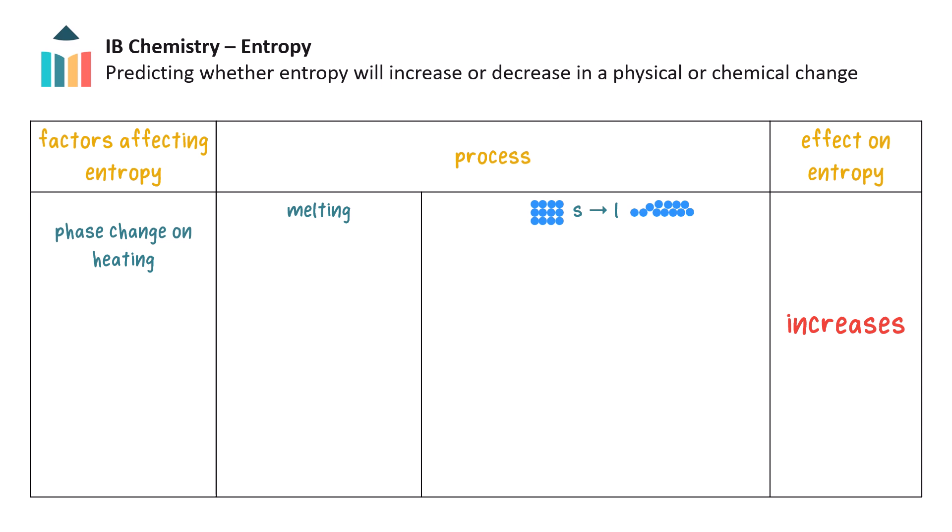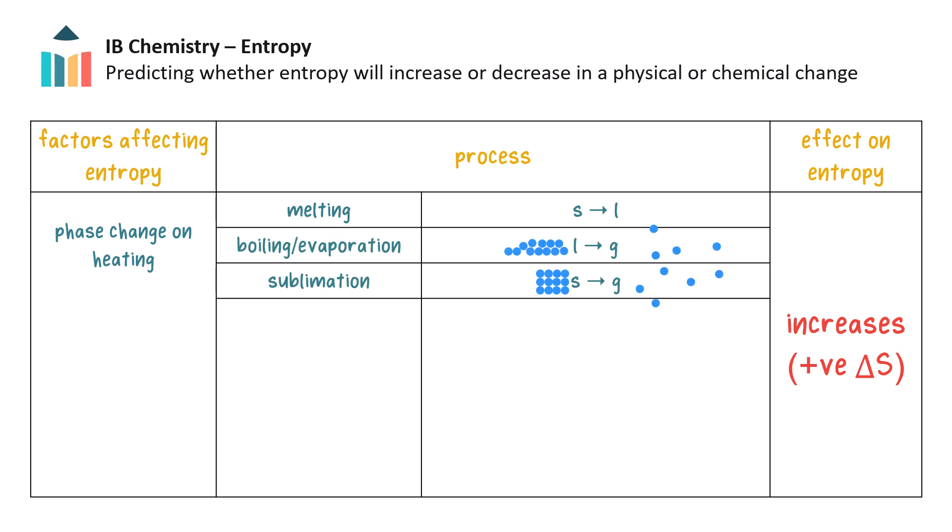We have already seen that when a solid changes to a liquid, the entropy of the system increases. The change in entropy is therefore positive. Likewise, in other phase changes with heating, that is, boiling or evaporation and sublimation, the entropy increases too, and again delta S is positive.